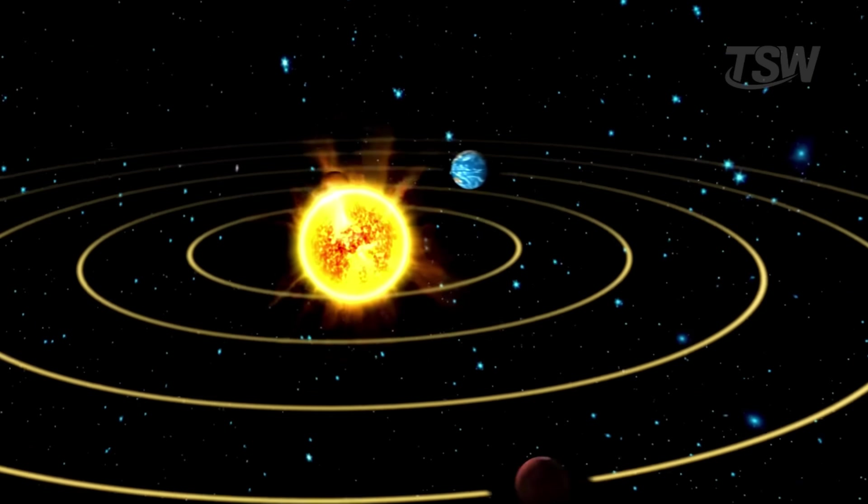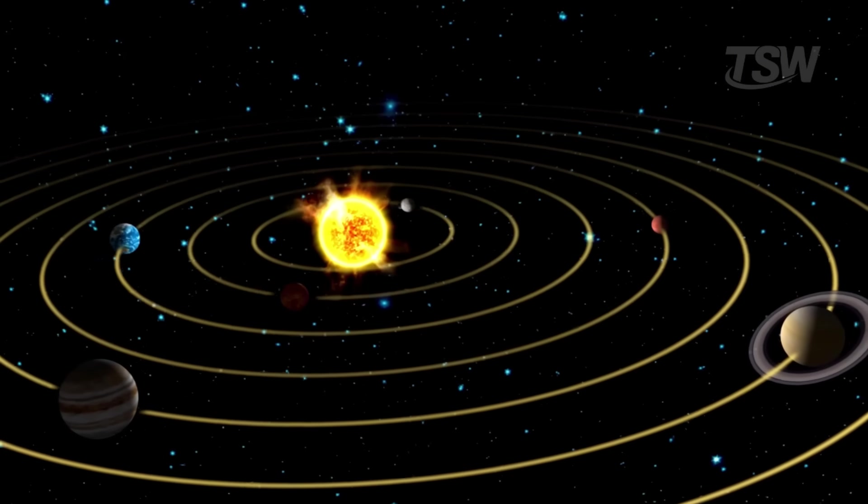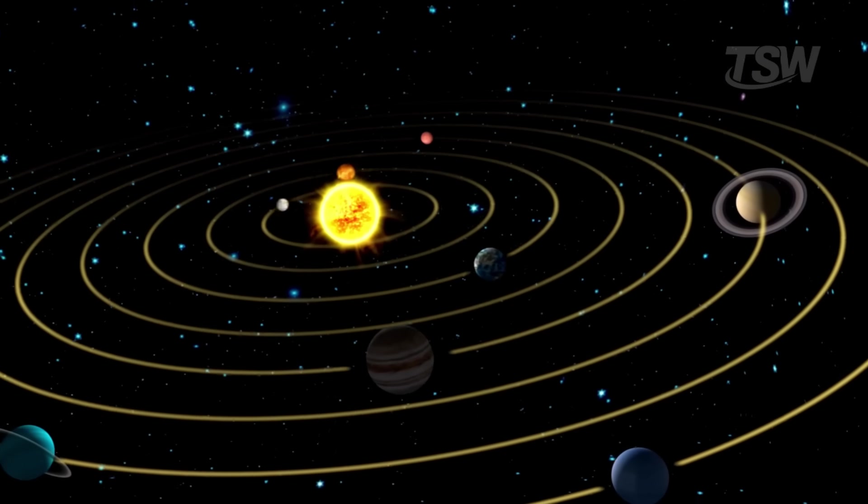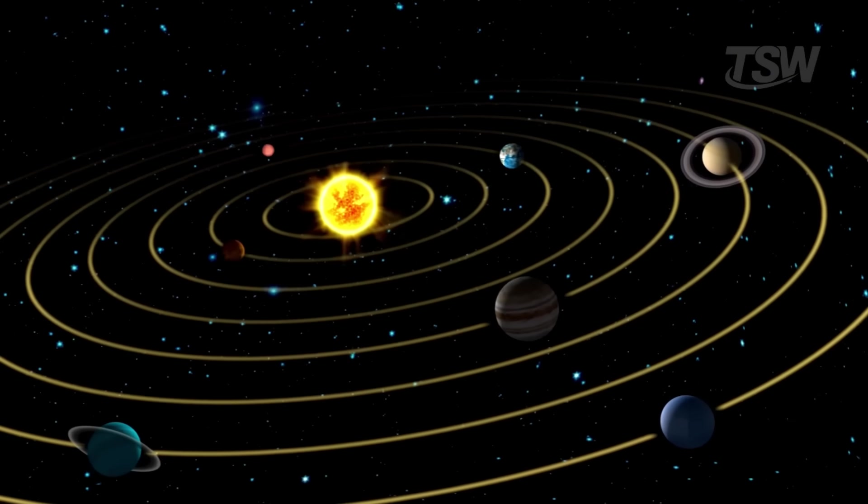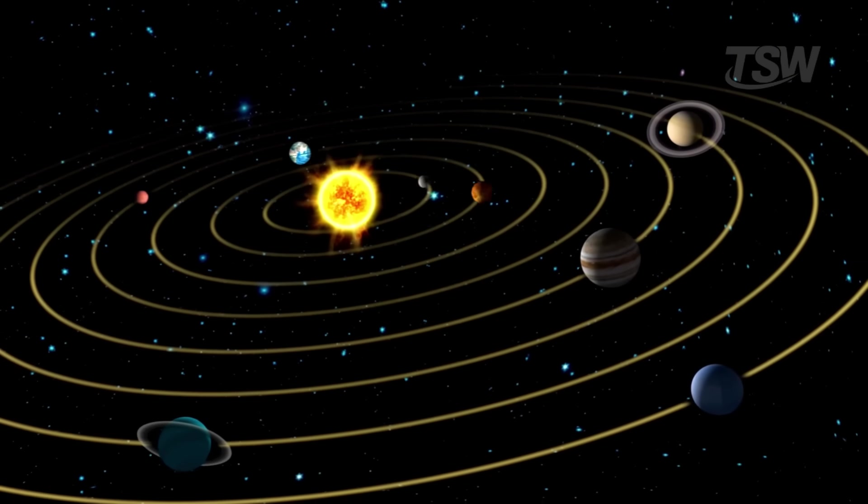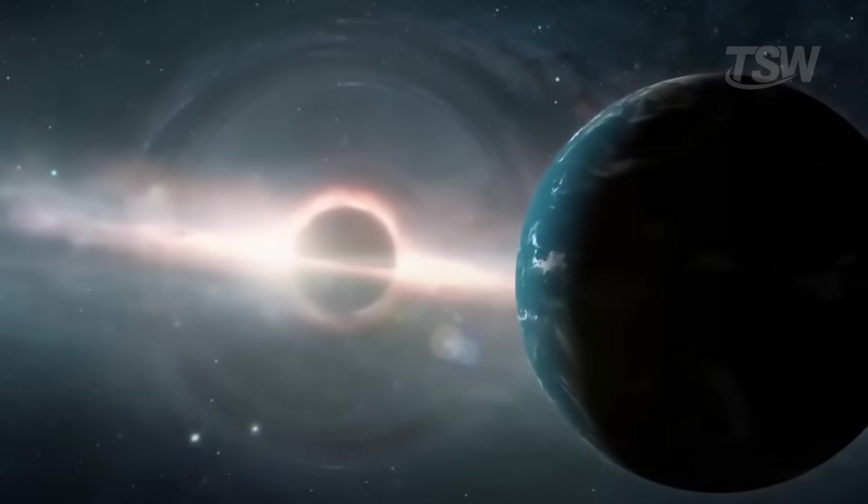At the center, the Sun, the star that dominates the gravitational game, keeps everything in line. Planets, moons, asteroids, dust, and gas. It's this invisible leash that prevents each body from wandering off on its own.